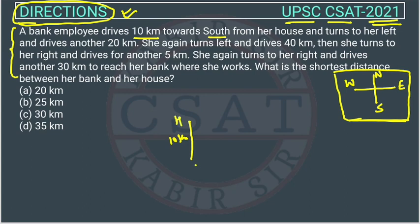She then turns to her left. Since she was facing south, her left turn means she is now facing east. She drives 20 km in that direction, so this segment is 20 km.